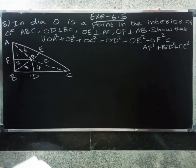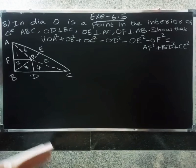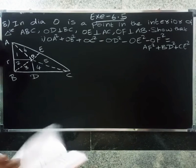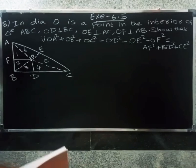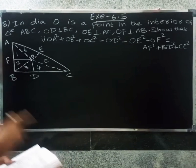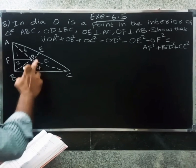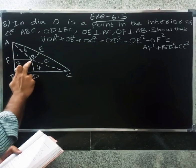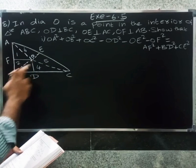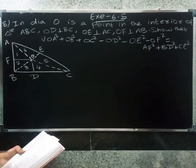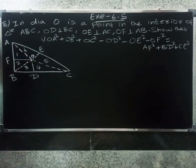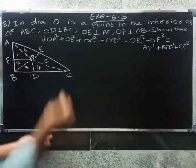Looking at the diagram, we have points B, D, C next to OE, next to AF — these are the points in the middle. Looking at the construction now with dotted lines showing the joined points.